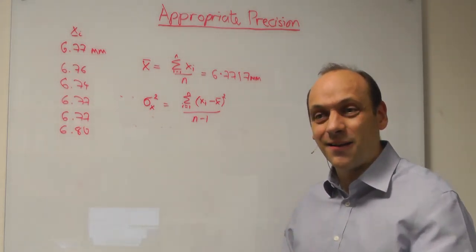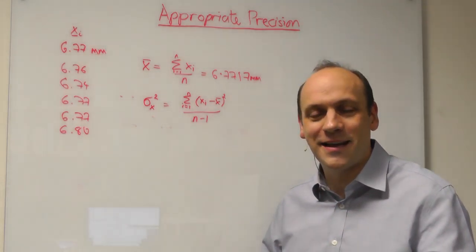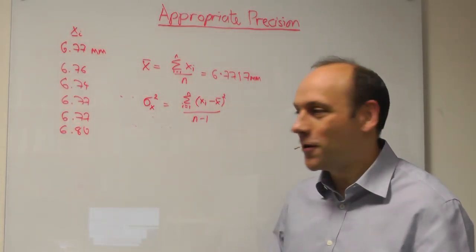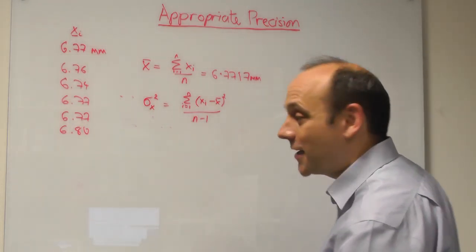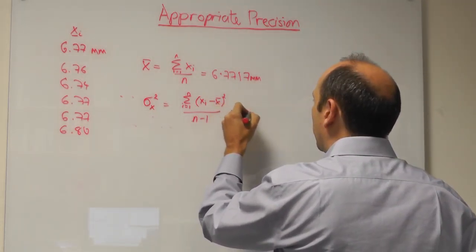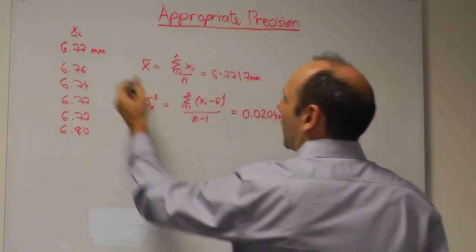Because if I had measured all million samples, I'd use n. But if I'm measuring only a sample of them, say 10 out of the million, I'd use n minus 1. Now, here I've taken a sample. And if I do that, I get a standard deviation of 0.0204 millimeters.